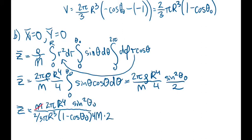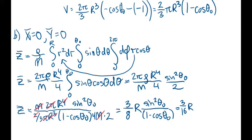Canceling gives us 3 eighths R sine squared theta naught over 1 minus cosine theta naught, which the book expresses as 3 sixteenths R times 1 minus cosine 2 theta naught over 1 minus cosine theta naught, which is the same using the sine squared plus cosine squared equals 1 trigonometric identity.